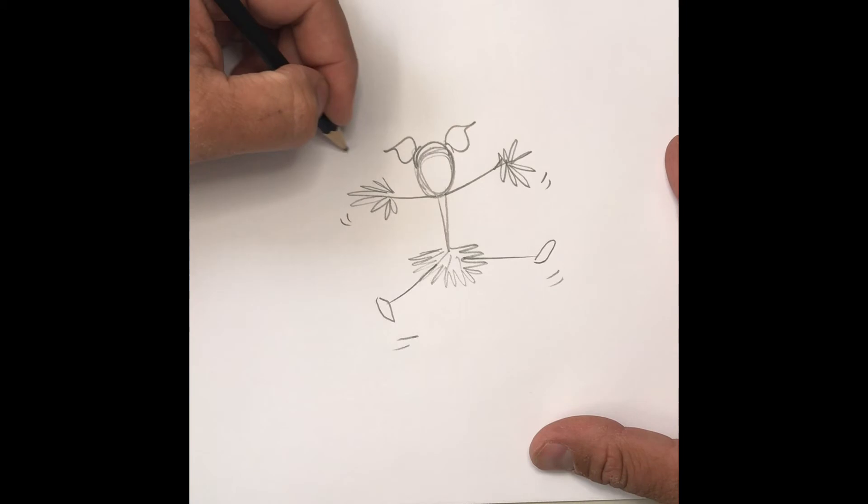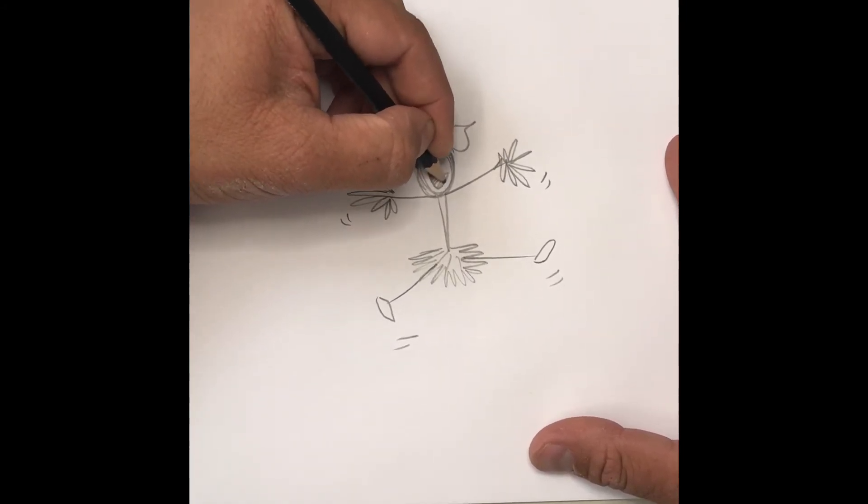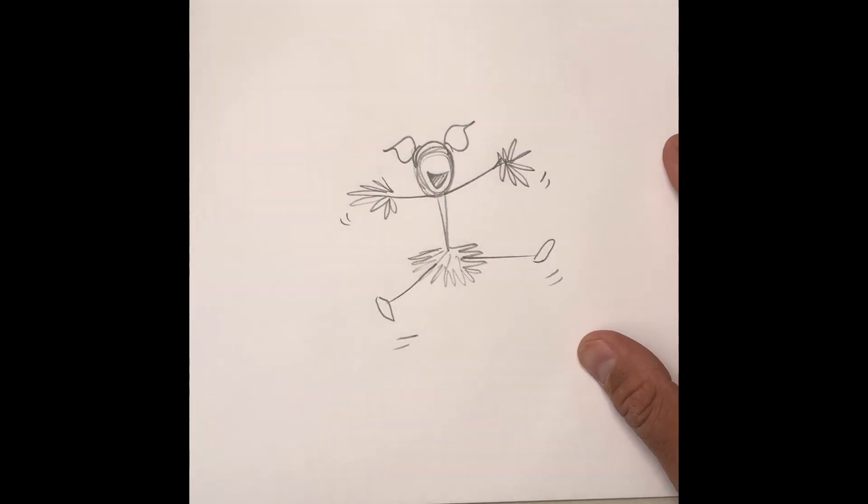Scrunchie, another pigtail. And most importantly on a cheerleader, the place to cheer: her mouth, so she can holler out those cheers and get the crowd moving.